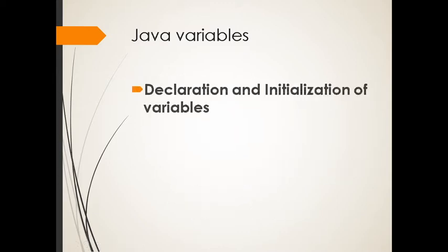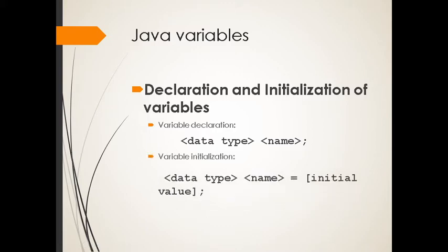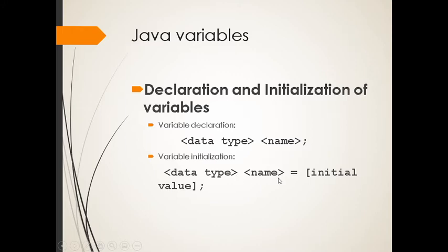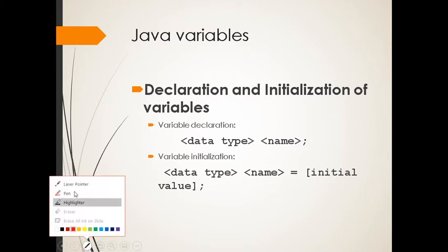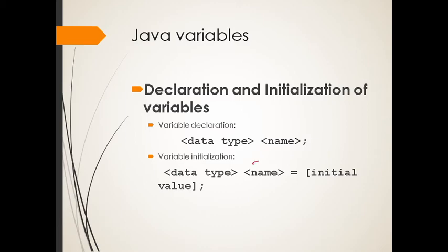For declaration and initialization of a variable, this is the syntax. We have data type, for example integer or int, then the name of your variable or your literal. For initialization, we have data type, then the variable name or literal, then your initial value. For example, you are assuming that the user's age is 10.